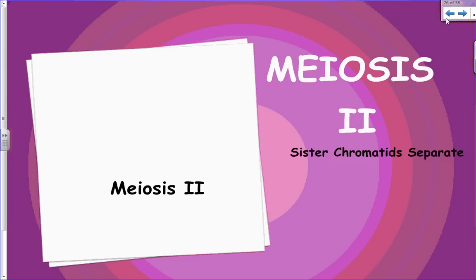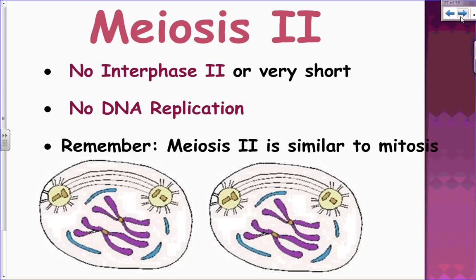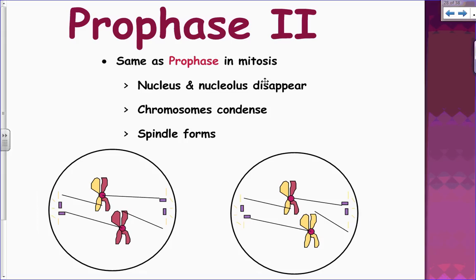Meiosis two can be summed up as the sister chromatids separating. It is sometimes preceded by a very short interphase, but most of the time there is no interphase and no DNA replication. Meiosis two is very similar to mitosis.